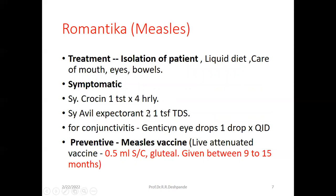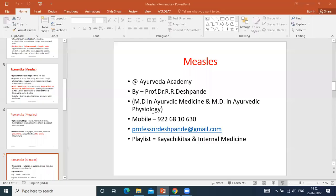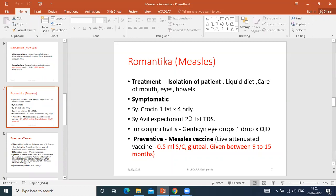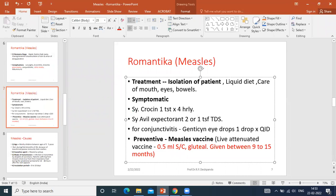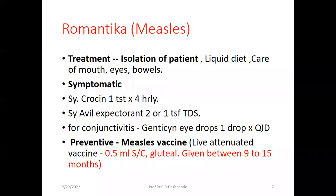Syrup Avil (chlorpheniramine) — anti-allergic, anti-itching, anti-prolactic — one teaspoon TDS as per the age of the child. For conjunctivitis, gentamicin eye drops: one drop in each eye QID — morning, afternoon, evening, and night. QID means four times a day.